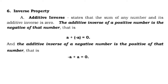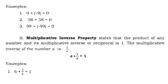Number 6, inverse property. For additive inverse: the sum of any number and its additive inverse is 0. The additive inverse of a positive number is the negative of that number, so A plus negative A equals 0. The additive inverse of a negative number is the positive of that number, so negative A plus A equals 0. For example: 9 plus negative 9 equals 0; negative 5 plus its additive inverse, 5, equals 0; and 99 plus negative 99 equals 0.